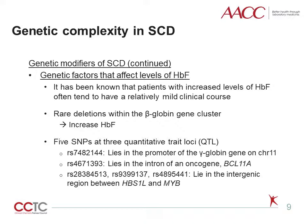Studies show that five SNP quantitative trait loci may act directly on the expression of the gamma-globin genes or affect the process of erythropoiesis to increase the level of hemoglobin F or the proportion of F-cell production. The rs7482144 SNP lies in the promoter of the gamma-globin gene on chromosome 11, which could be explained by a direct effect on gamma-globin gene expression. The rs4671393 SNP lies in an intron of the oncogene BCL11A, which is expressed in erythroid precursors. Three SNPs lying in the intergenic region between HBS1L and MYB have independent effects on hemoglobin F levels in SCD. MYB is known to play an important role in normal erythropoiesis.